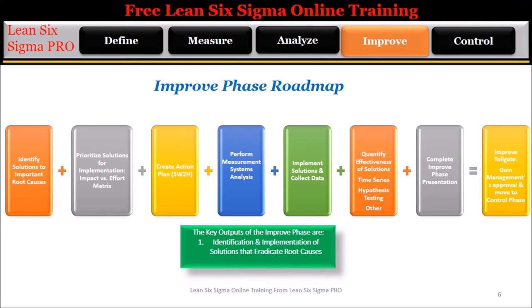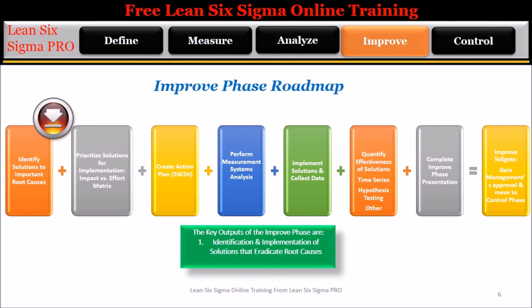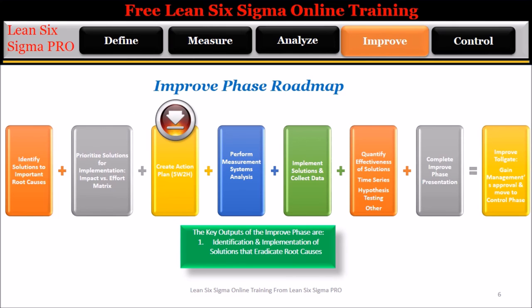The Improve Roadmap is a summary of all of the steps required to complete the improve phase. Step 1: Identify solutions to important root causes. Step 2: Prioritize solutions for implementation using an impact versus effort matrix. Step 3: Create an action plan using 5W2H for improve implementation.